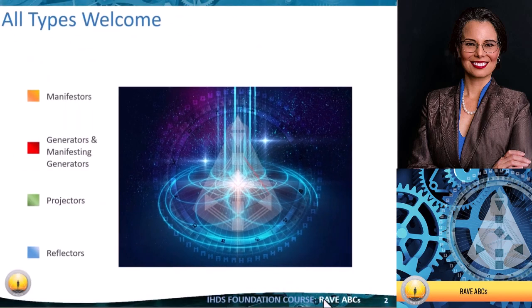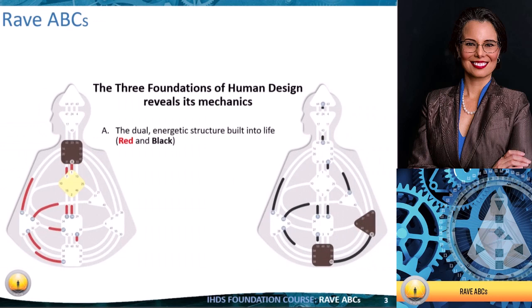Rave ABCs is an international human design school foundation course, and all types are welcome: manifestors, generators, manifesting generators, projectors, and reflectors. With Rave ABCs we have three actual foundations of human design that reveal the mechanics of how it all works. We have this dualistic energetic structure that's built into life — our red and our black.